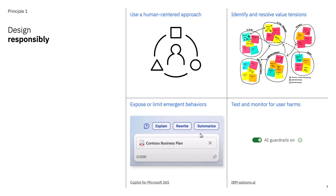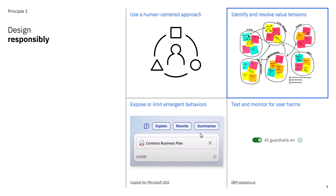Our first principle is to design responsibly, which is something we should be mindful of when designing any product with or without AI. This principle is all about ensuring that our product solves real user problems and minimizes harm to our users. Our first recommendation is to use a human-centered approach to make sure you're designing for the user and their actual needs. The worst thing we can do as designers is to incorporate generative AI when it's not actually solving a real user problem. Methods that help you identify and resolve value tensions, such as value-sensitive design, can be really helpful.